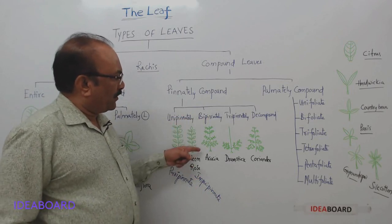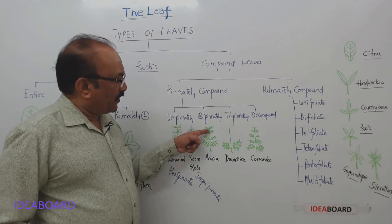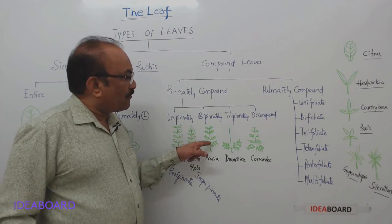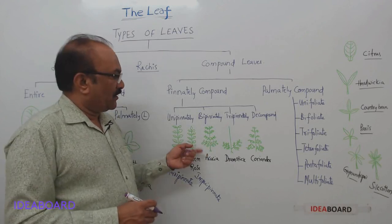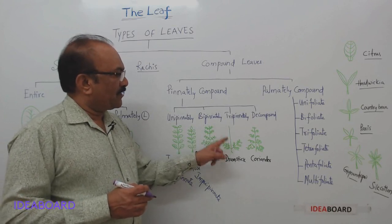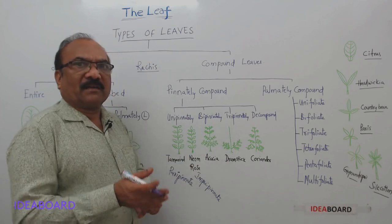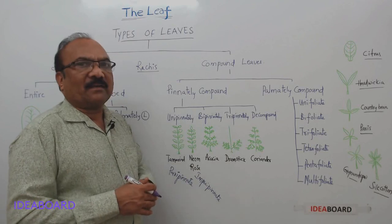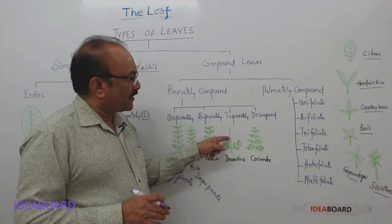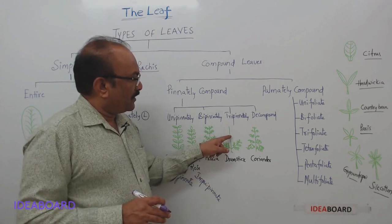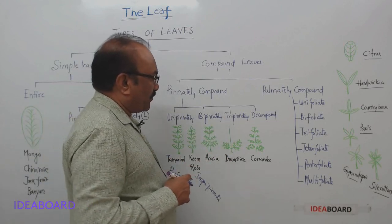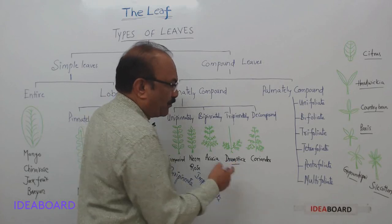For bipinnately compound leaves, the example is Acacia (gum tree). There is a primary rachis that produces branches called secondary rachii, and leaflets are present on the secondary rachii. In tripinnately compound leaves, the secondary rachii produce further branches called tertiary rachii, and leaflets are present on the tertiary rachii. The example is the drumstick plant.